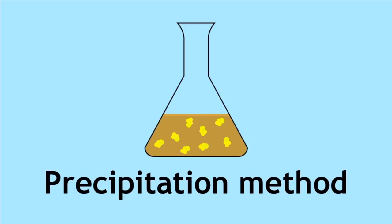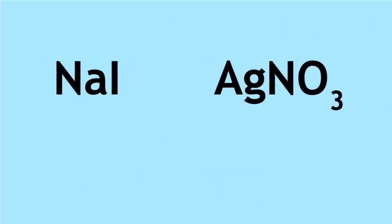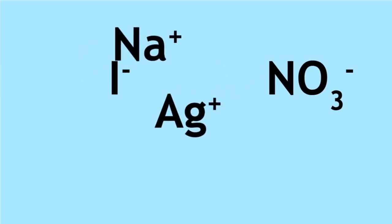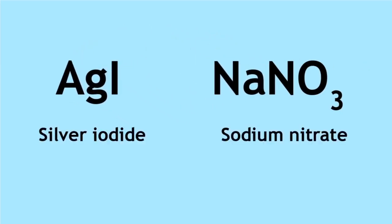Sodium iodide and silver nitrate have undergone a double displacement reaction whereby the sodium ion and the silver ion have switched places, creating silver iodide and sodium nitrate.